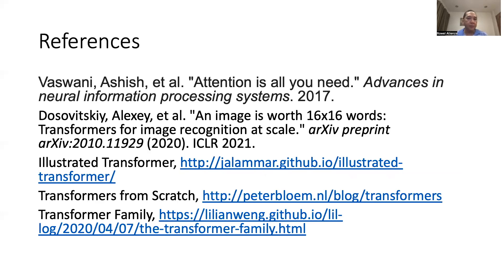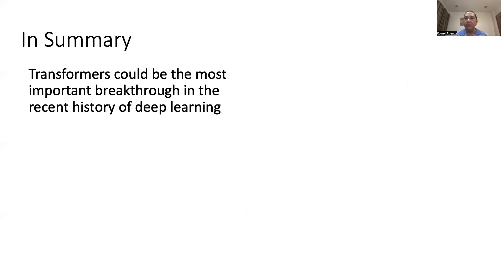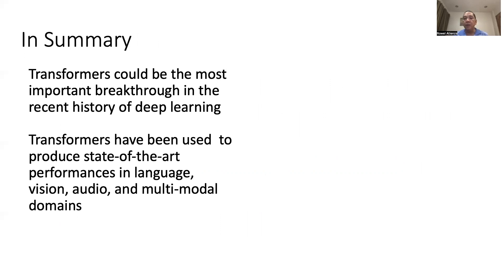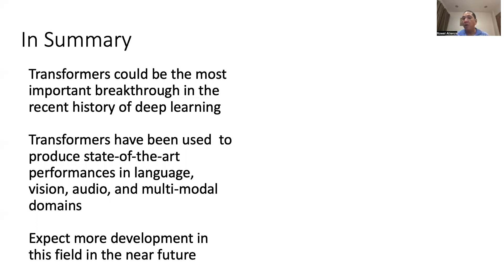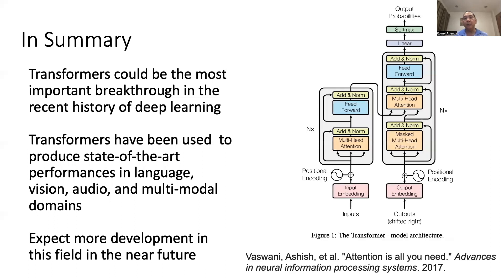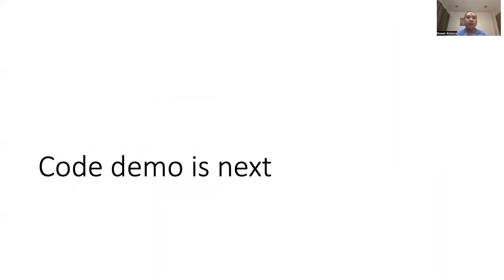To learn more about transformers, there are useful tutorials and references provided. In summary, transformers could be the most important breakthrough in the recent history of deep learning. Transformers have been used to produce state-of-the-art performance in language, vision, audio, and multimodal domains. Expect more development in this field in the near future. This is the neural network architecture from the original attention paper, which ushered the era of transformers. Code demo is next.